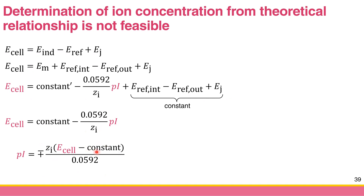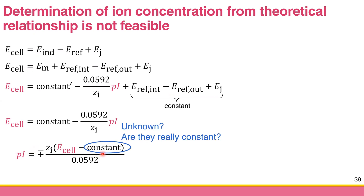In theory, if you measure E_cell and know the charge of the ion and the constant — the reference potential — you can find the p_ion. But in real life, are they really constant? Are there any other terms you may not know? Of course — there is junction potential. You cannot quantitatively find it. So in real life, we cannot calculate the concentration from theory.